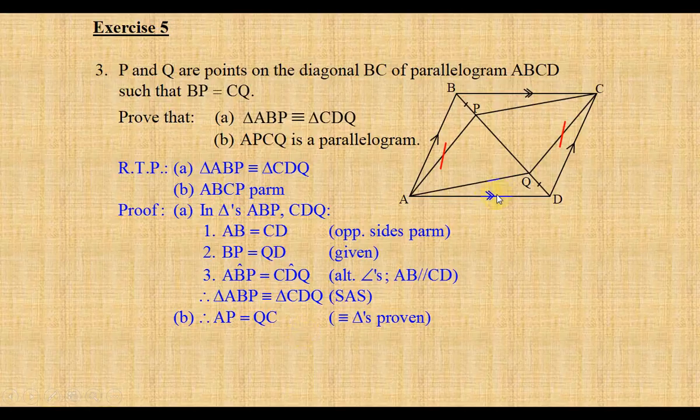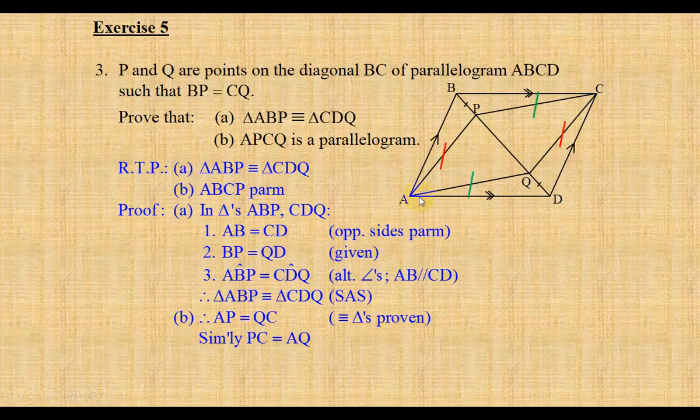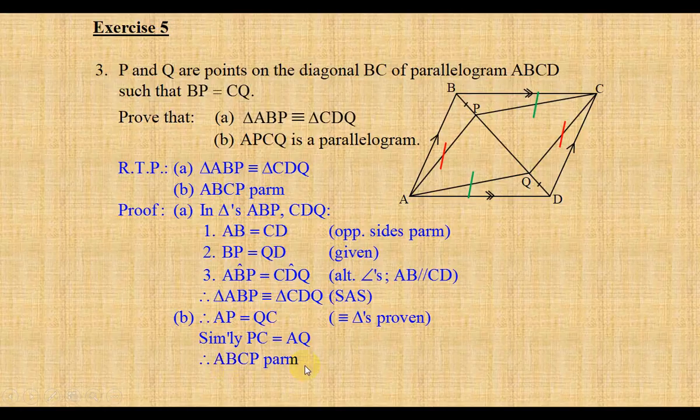In the same way, if I look at triangle AQD and CPD, we can prove that AQ is equal to PC. Concluding that ABCP has to be a parallelogram, and our reason there is converse opposite sides of a parallelogram.